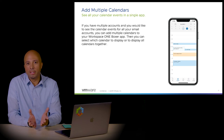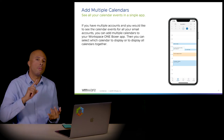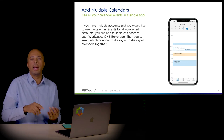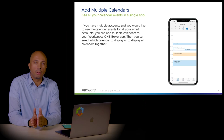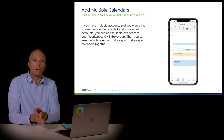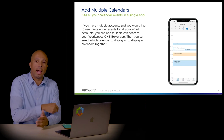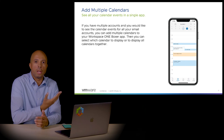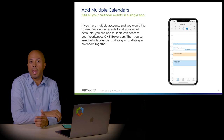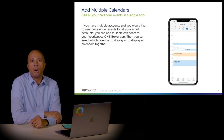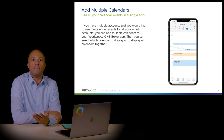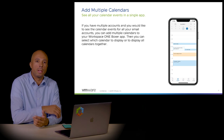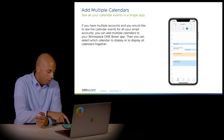If you want to see multiple calendars in Boxer, that's supported. You might have one calendar for your personal life, one for your company, and possibly a separate calendar from an external vendor. All these calendars can exist in one single location, and each is highlighted and designated by a color tab so you know exactly which event is associated with which calendar.